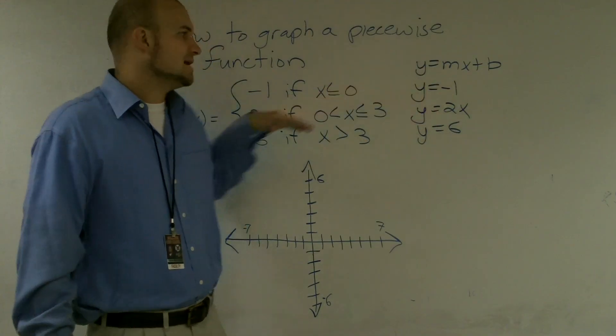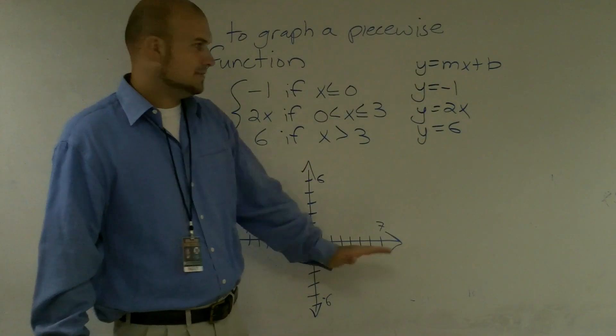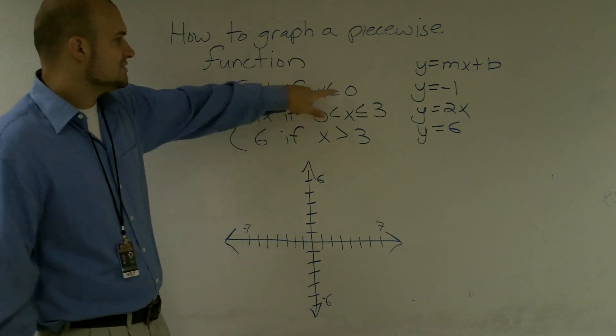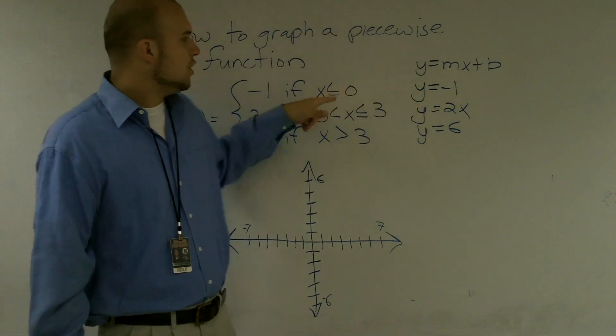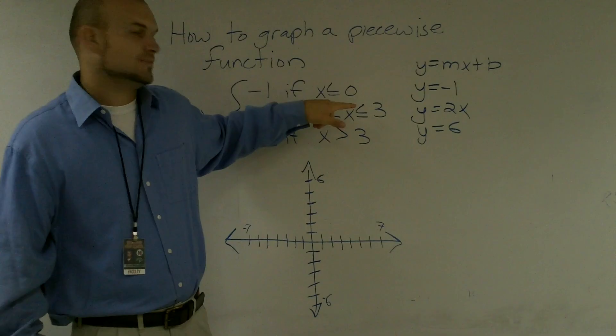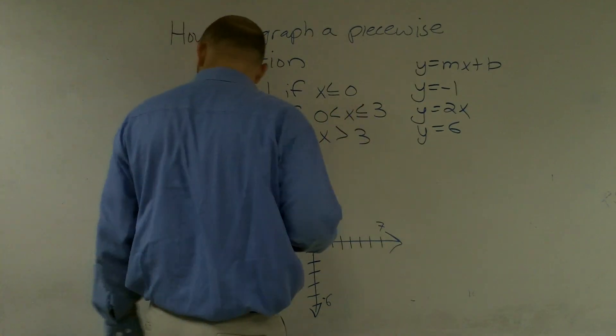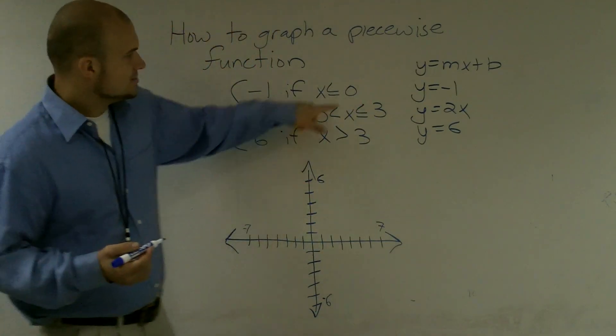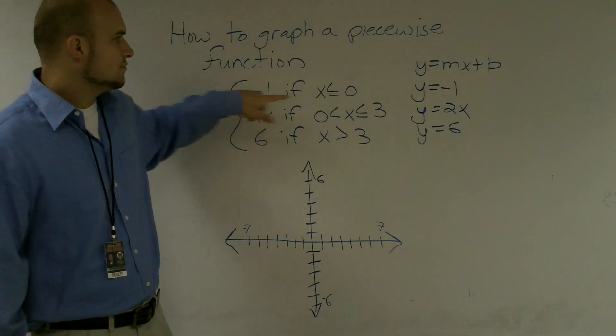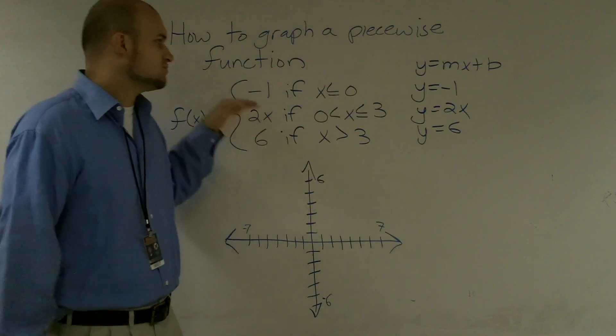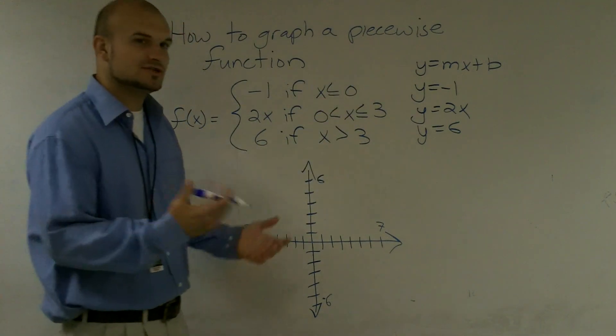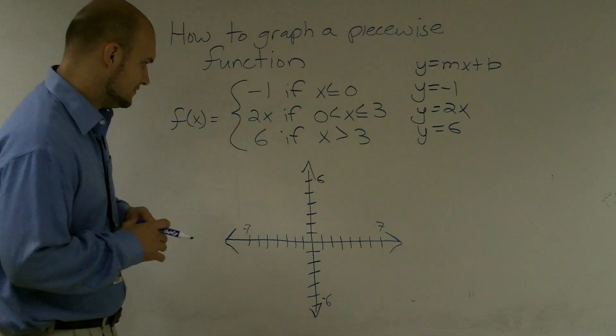Therefore, this is going to be a constant line at negative 1. Now, when graphing a linear equation, I notice that I have constraints. This graph is only true when x is less than or equal to 0. So you can just graph it when it's only true, or you can graph the whole equation and then start erasing where it's not true. I'm going to go through that just so you guys can see what the whole graph will look like.